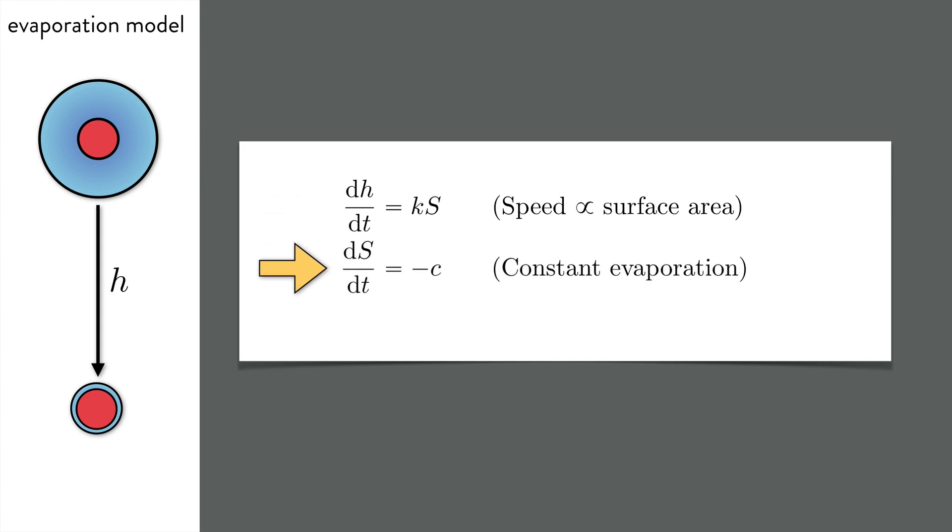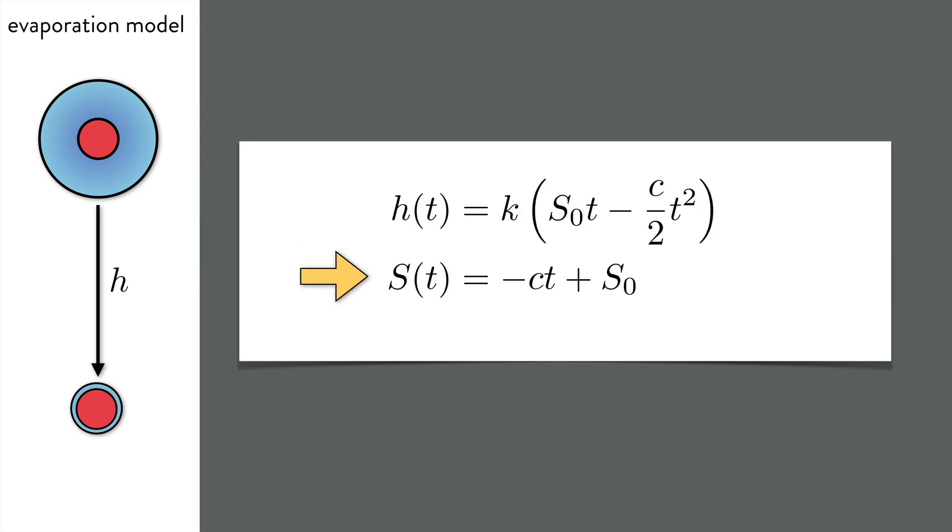Then we need an evaporative law. And the simplest law is that the evaporation is constant, causing the surface area to decrease at a constant rate. Solve the two equations. Notice that the surface area is decreasing, and there is a critical time where the surface area is zero. This is the point where the liquid has completely evaporated.